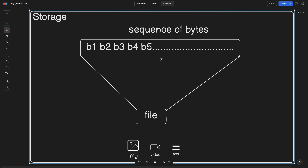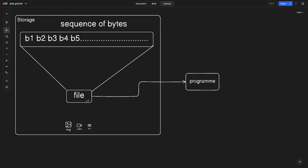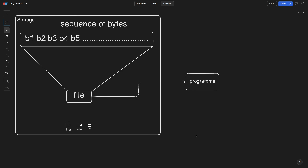How is an image different from a video, and video different from a text file? The bytes stored in a file are interpreted as image, video, or text — and this is determined by the program reading it. If it is a program that reads text files, for example a text editor like Notepad, it interprets every byte as text. If the program is an image viewer, it reads the file bytes and tries to interpret them as image data.